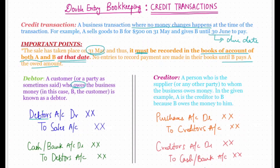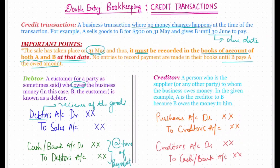Sales Account will be credited. The second entry will be passed at the time of payment: Cash Account will be debited because money is coming in, and Debtors Account will be credited.